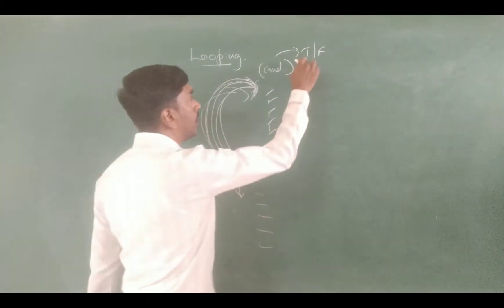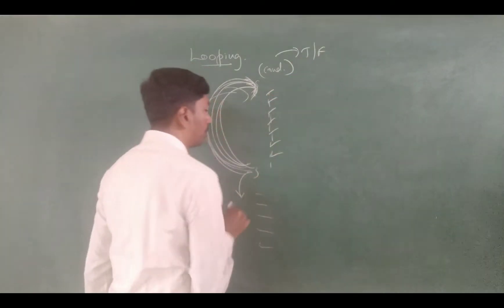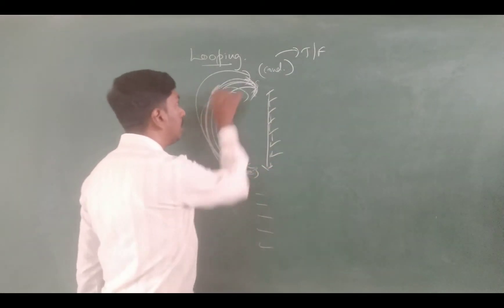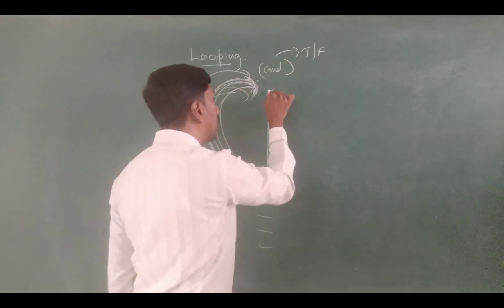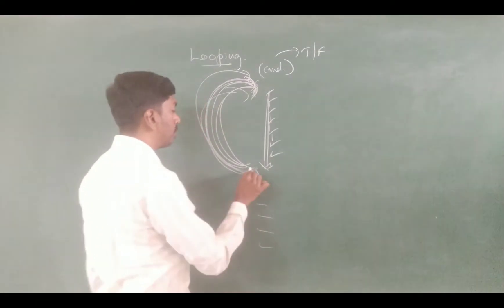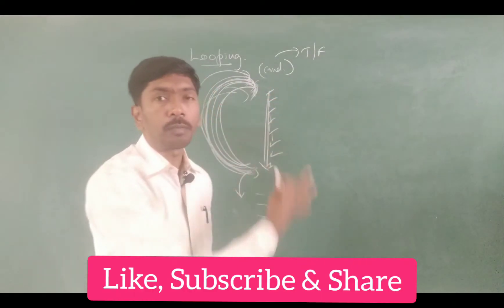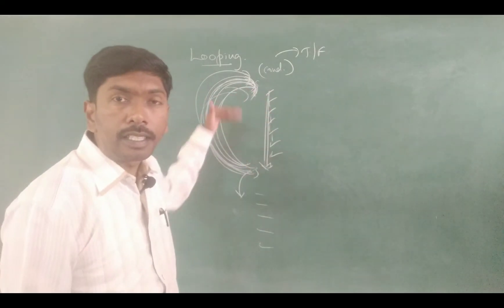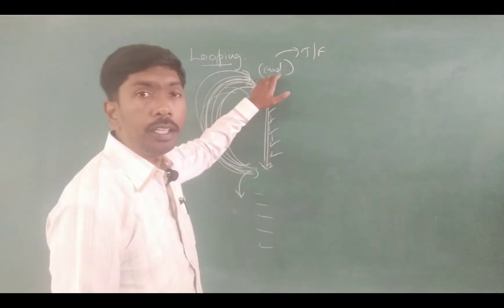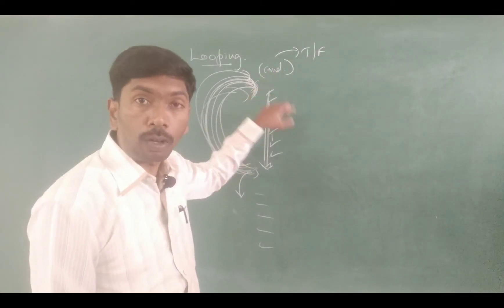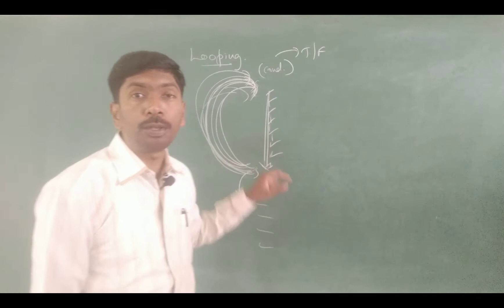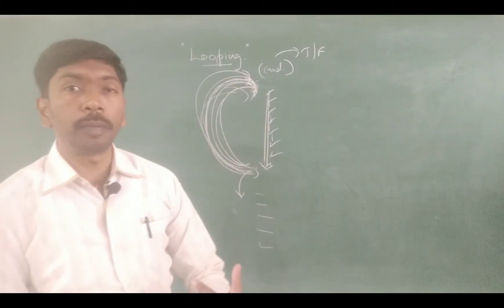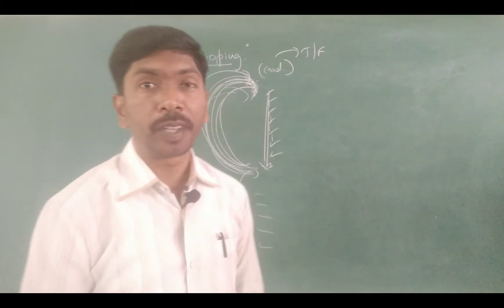If the condition is true, execute; if false, stop. If the condition is true, then it executes the block of statements, then again checks the condition. If the condition is true again, it executes again. This condition check and block execution repeats until the condition becomes false. This repeated execution is called looping.